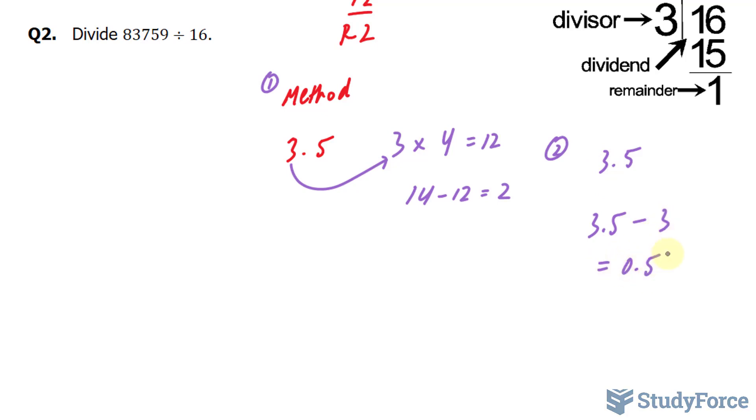You then take 0.5 and multiply it to the divisor. So our divisor was 4. 4 times 0.5 gives us 2.